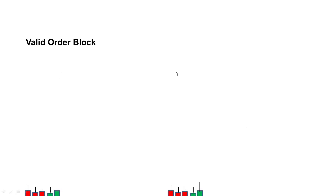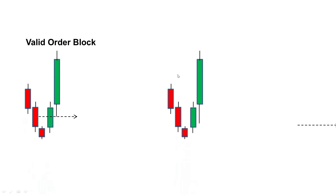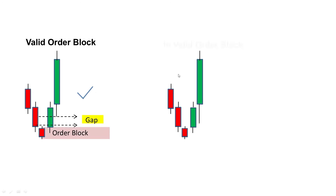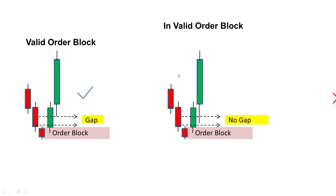Why do we consider a valid order block? What makes an order block valid? 1. They are considered manipulation areas formed before a significant market move. 2. Most people view these zones as places where large numbers of people buying or selling are found, or placing orders.